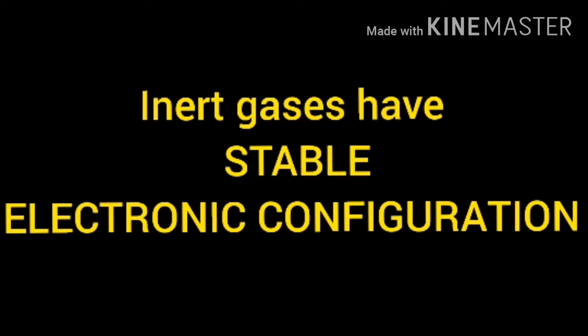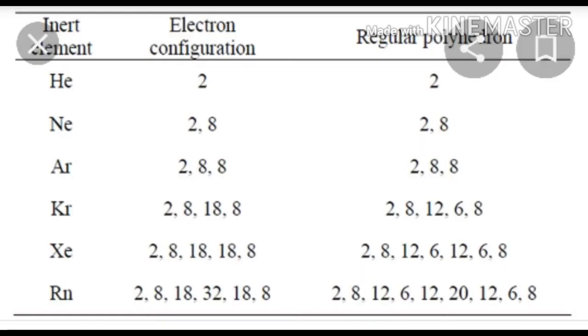What do you mean by stable valence electron? The outermost shell consisting of eight electrons is called a stable valence electron — that is, having a stable electronic configuration. Electronic configuration is the number of electrons present in the particular atom. Here, a table is given for inert gases. Helium has two electrons, and neon has the configuration two, eight.